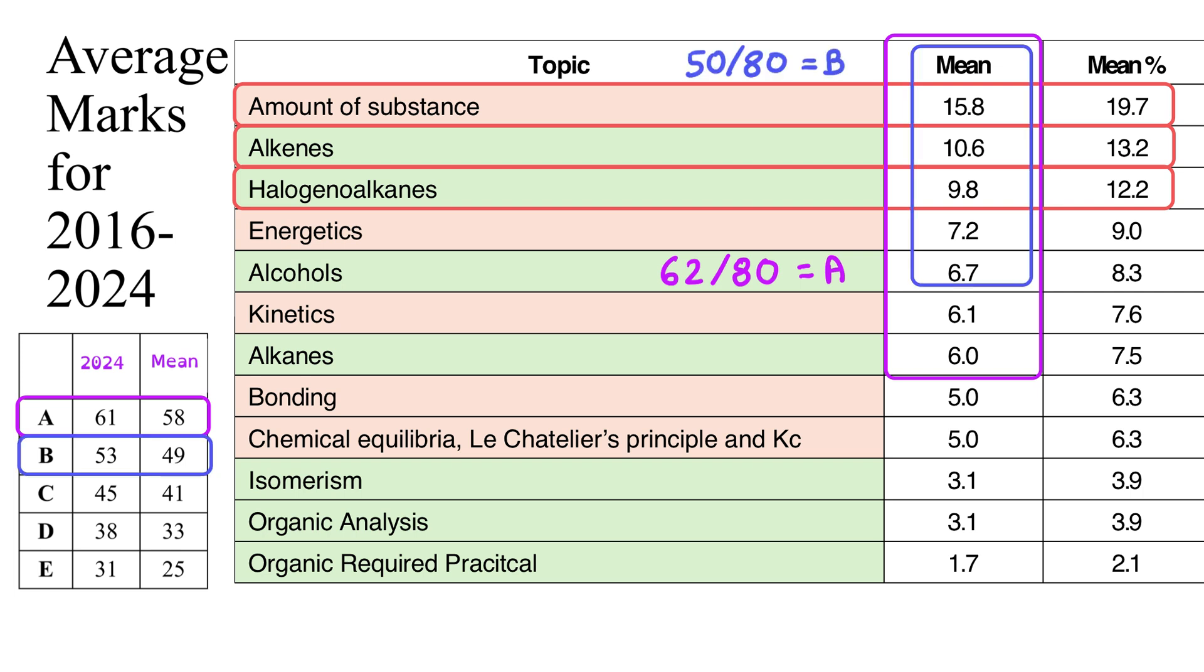If we look at a grade B we can see that a grade B has been on average 49 marks out of 80. And the top five topics across all of those papers have been worth 50 out of 80 marks on average. And that would have been enough to get you a grade B if you'd only picked up those marks from those five topics.